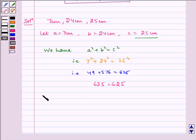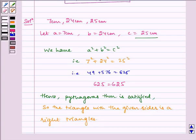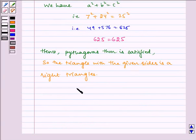Hence, Pythagoras theorem is satisfied. Therefore, the required answer is yes, it is a right triangle, with the length of hypotenuse equal to 25 cm.